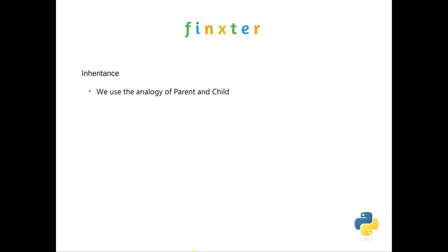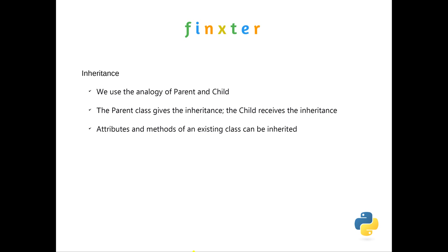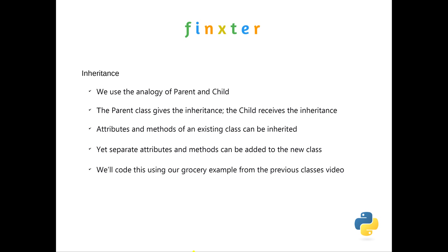Inheritance uses the analogy of parent and child — the parent class gives the inheritance, the child receives it. The attributes and methods of an existing class can be inherited, which saves rewriting code effectively. Separate attributes and methods can be added to a new child class, and you can still go back to the old parent class and use those also. We'll see this using our grocery example from the previous classes video.